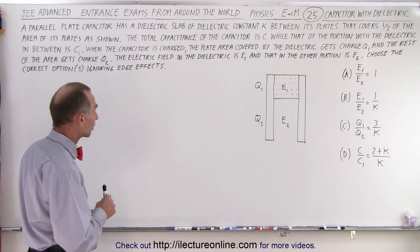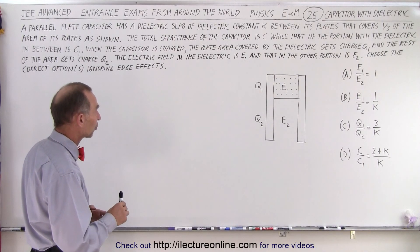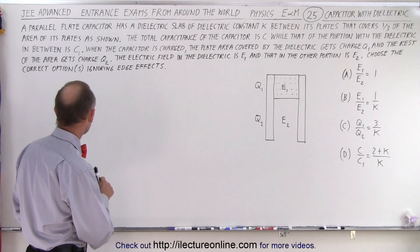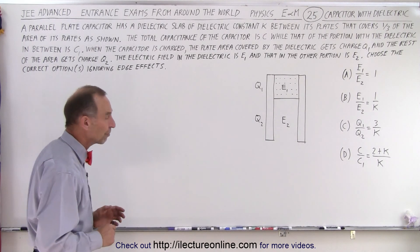The electric field in the dielectric is E1 and then in the other portion is E2. Choose the correct option or options ignoring the edge effects.